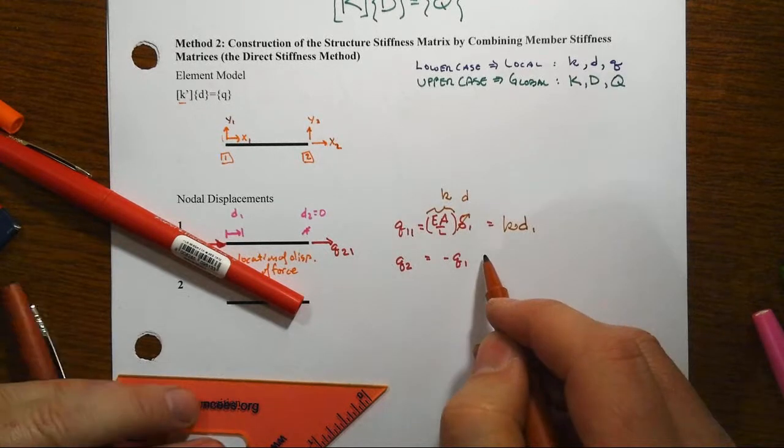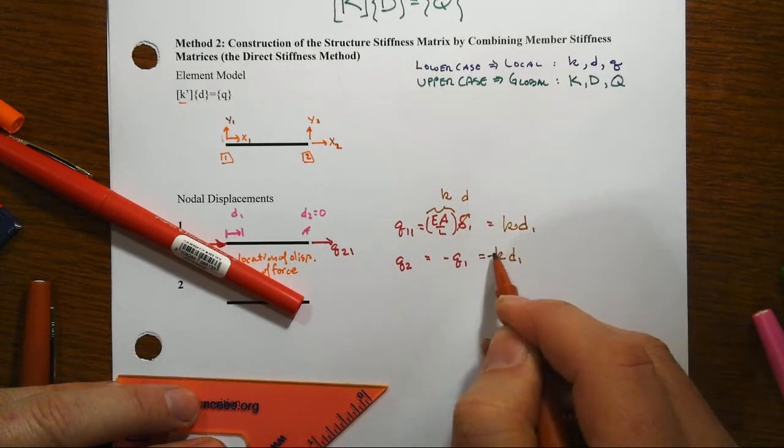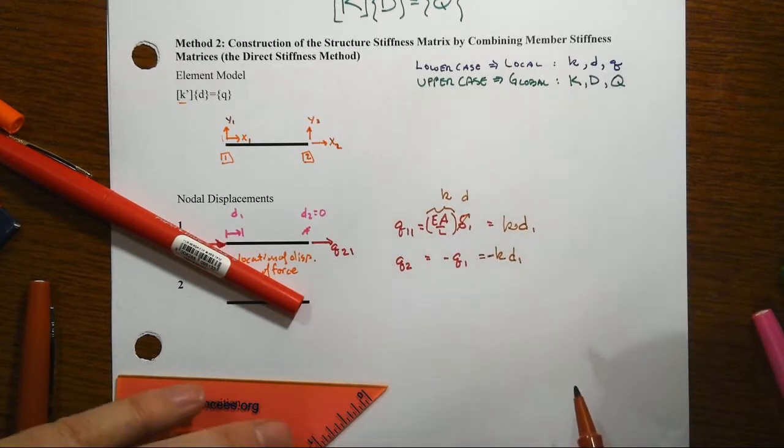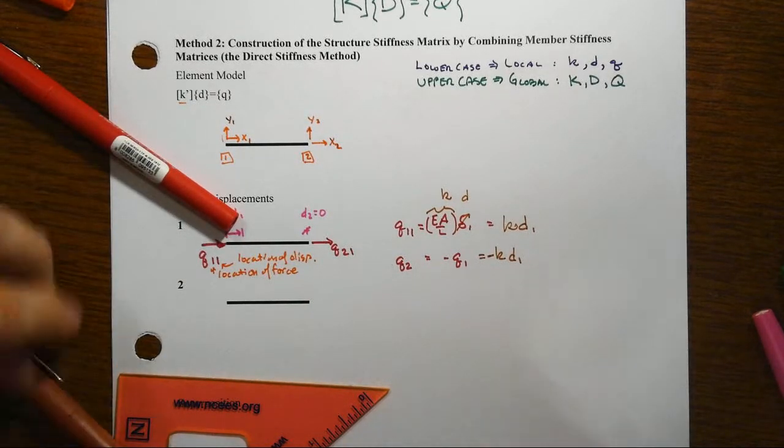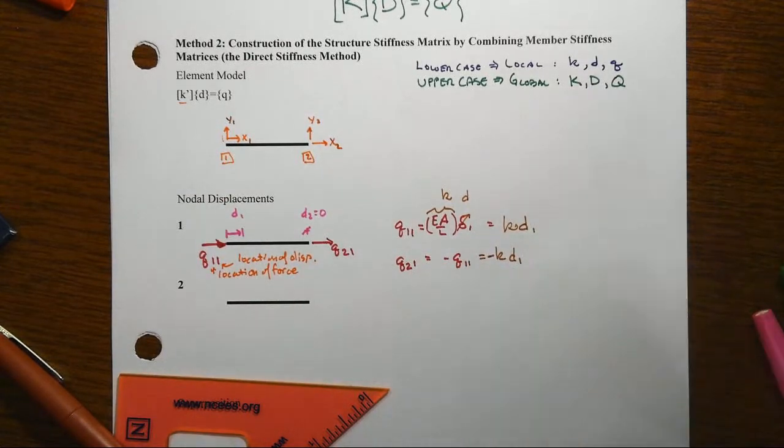So kd1, and then the other one would end up being k times d1 also, but it would have a negative sign there for that q2. And we need to add that subscript here. Get that consistent.